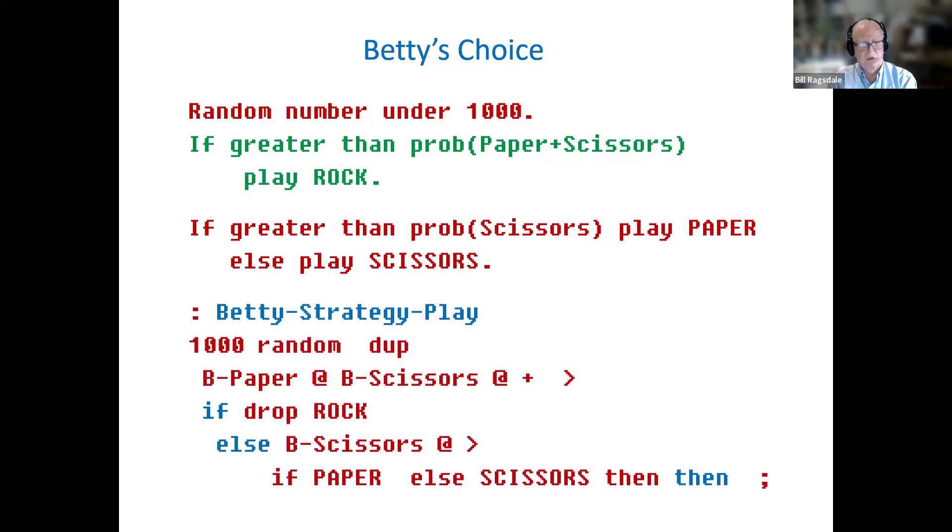And here is Betty's strategy of play. First, we generate a random number from 0 to 999. That is the 1,000 random. It's applied through a little logic series. And it picks out, based on her current probability, what Alan played, what she will play.